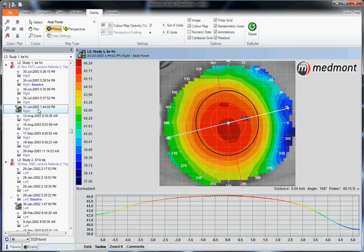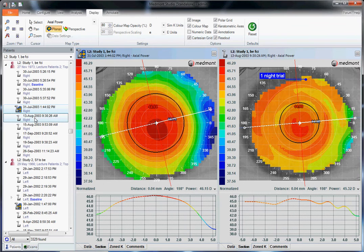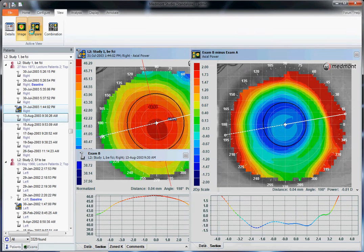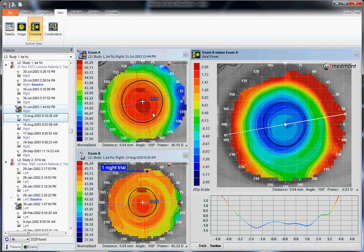Once you've highlighted your best baseline or in this case the composite, then we hold down the control key on the keyboard and click on our post-treatment topography. Now we have baseline or pre-ortho-K and post-ortho-K topography, one night in treatment. Then we go up to view and compare. This brings up the comparison map, subtractive map, or difference map.